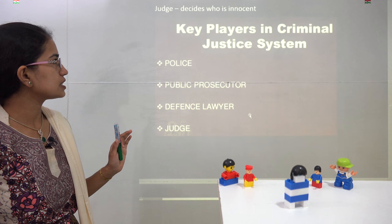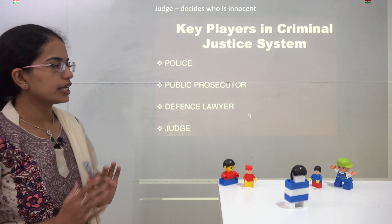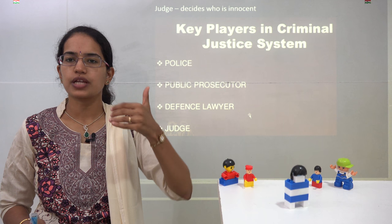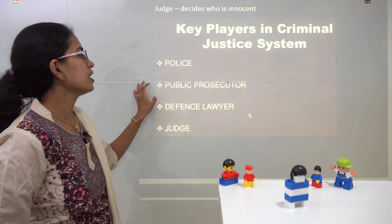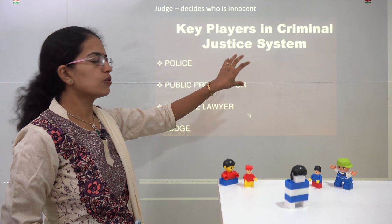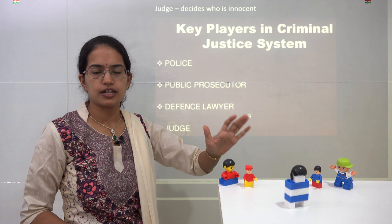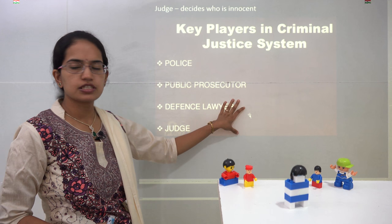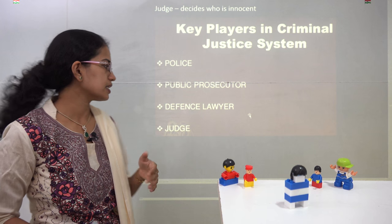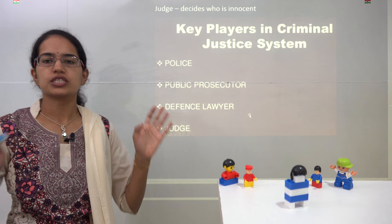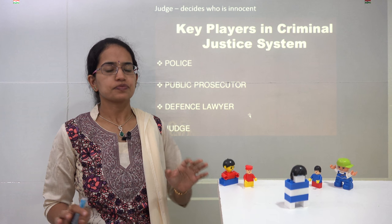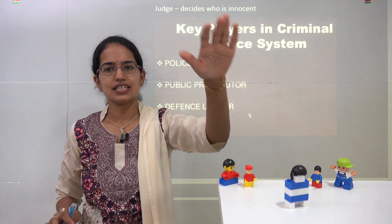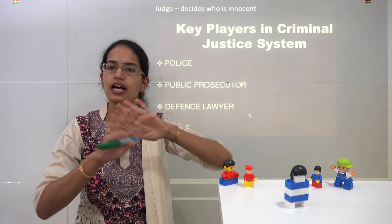Under the criminal justice system there are 4 key players. You have the police officer, who reports the case as the first witness. You have the public prosecutor, a law officer appointed by the government at the central, state, or district level. Then you have the defense lawyer, who defends the case, and finally the judge, who is impartial and unbiased — depicted here without eyes to show that impartiality.